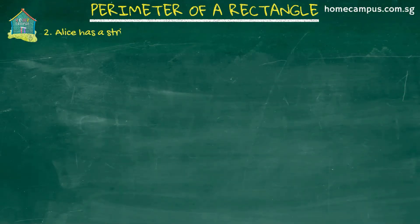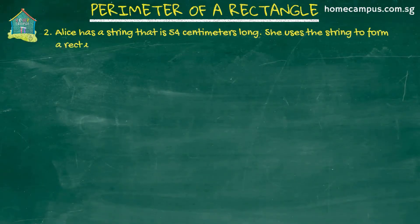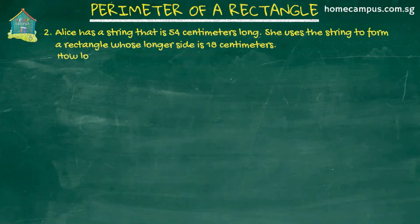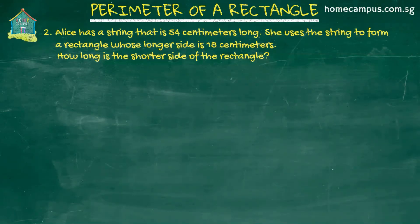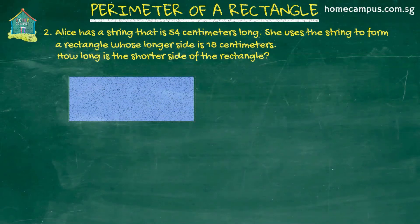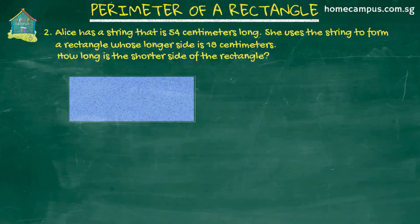On to the next problem. Alice has a string that is 54 centimeters long. She uses the string to form a rectangle whose longer side is 18 centimeters. How long is the shorter side of the rectangle? Alice makes a rectangle using a string and the string is 54 centimeters long. This tells us that the distance around the rectangle she formed is 54 centimeters — in other words, the perimeter of the rectangle is 54 centimeters.